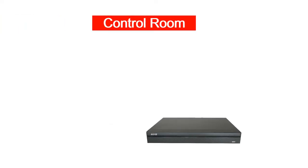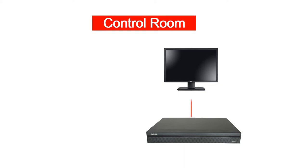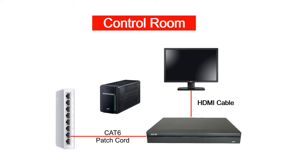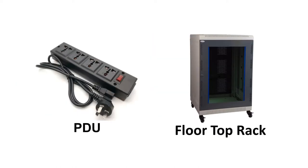Next we check the control room. Here we require a minimum of 4 channels network video recorder with sufficient capacity of surveillance hard disk for storage. A monitor is connected to the recorder via HDMI cable. A Gigabit non-PoE network switch is recommended to establish the network between the control room and the camera side. A CAT6 UTP patch cord is required to connect the NVR to the switch, and a UPS is suggested for power backup. Finally, a floor top rack with PDU is suggested for placement of the recorder and other equipment.